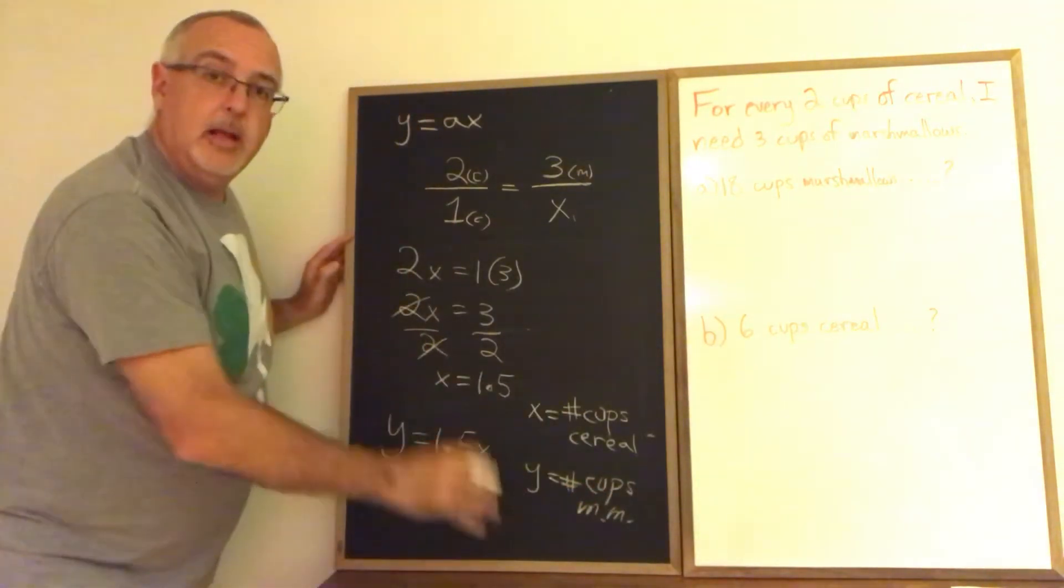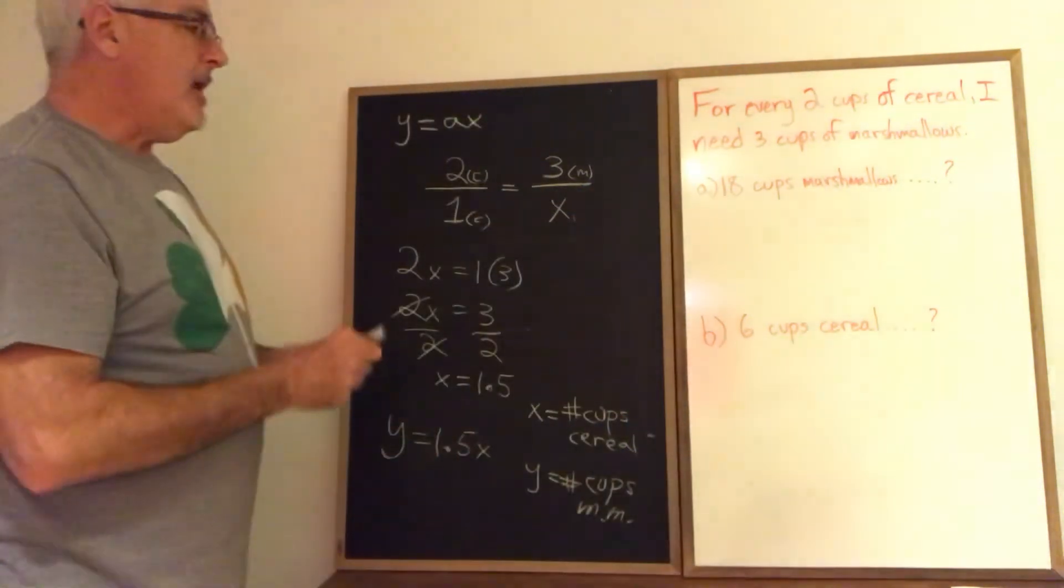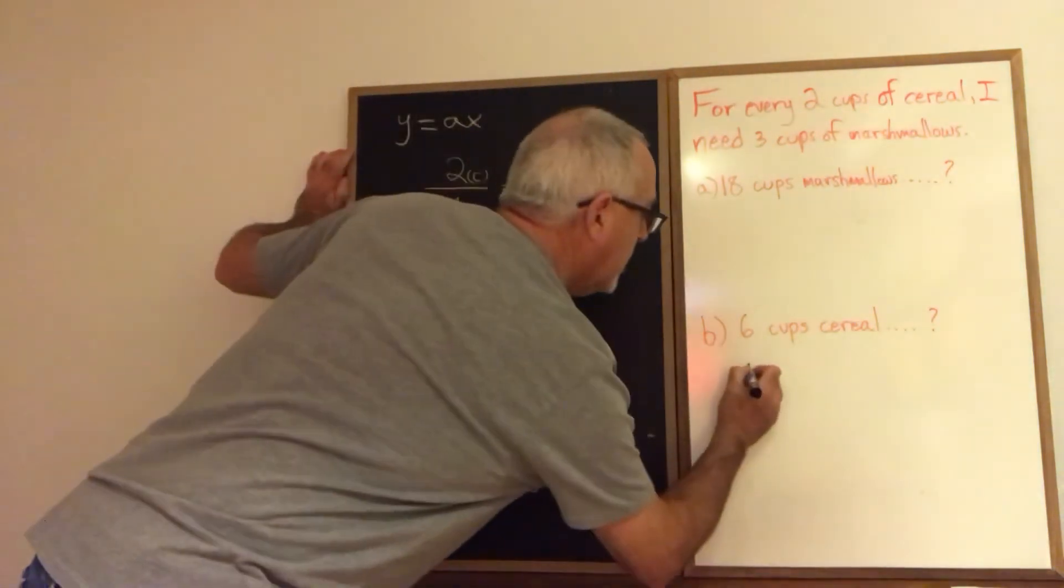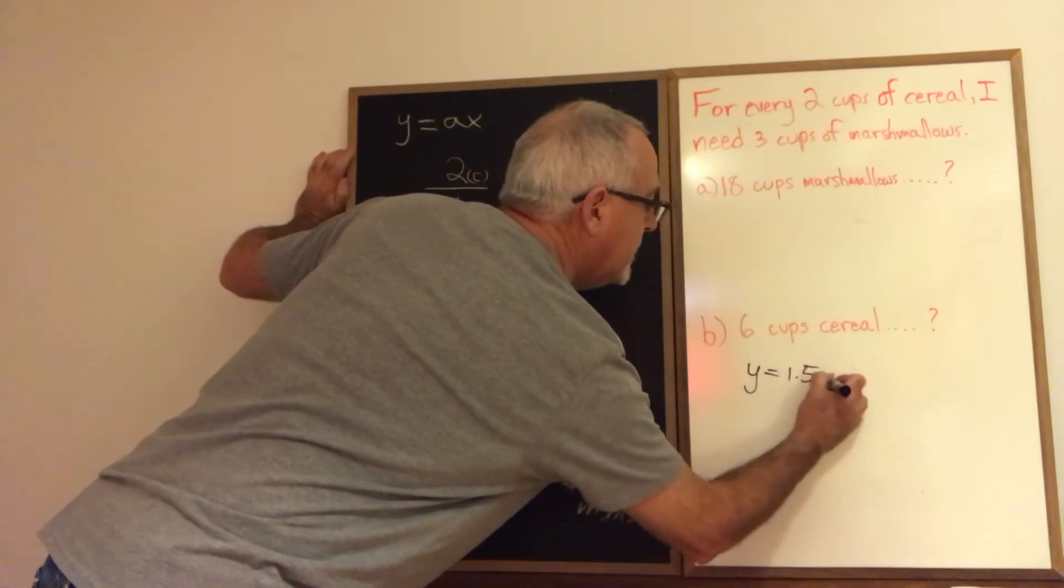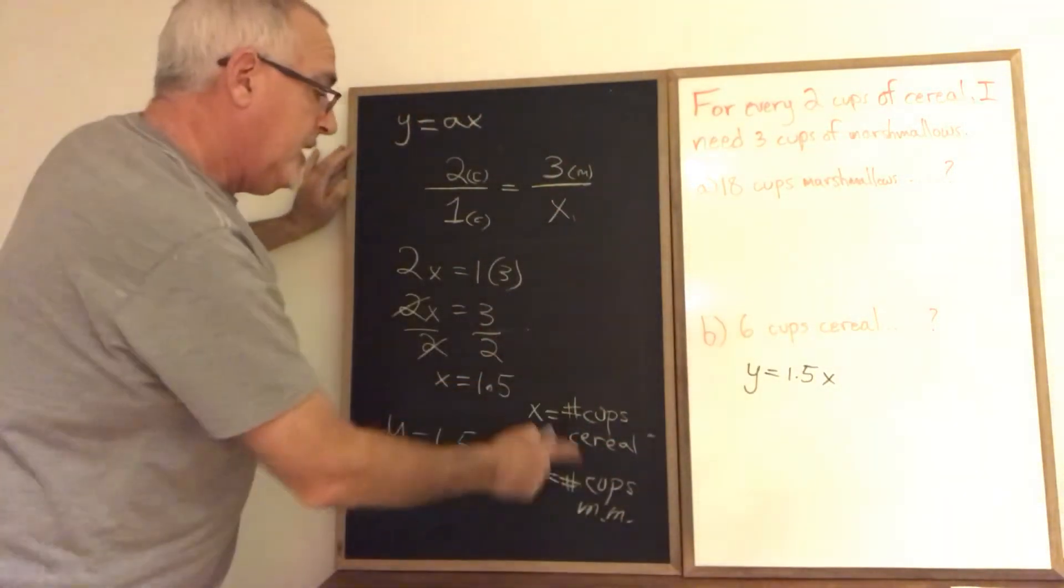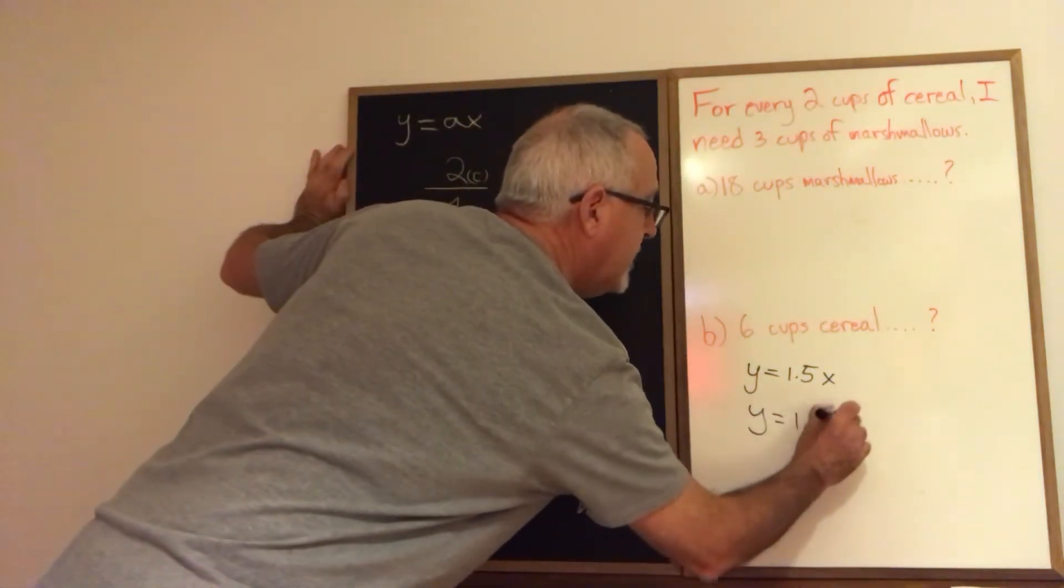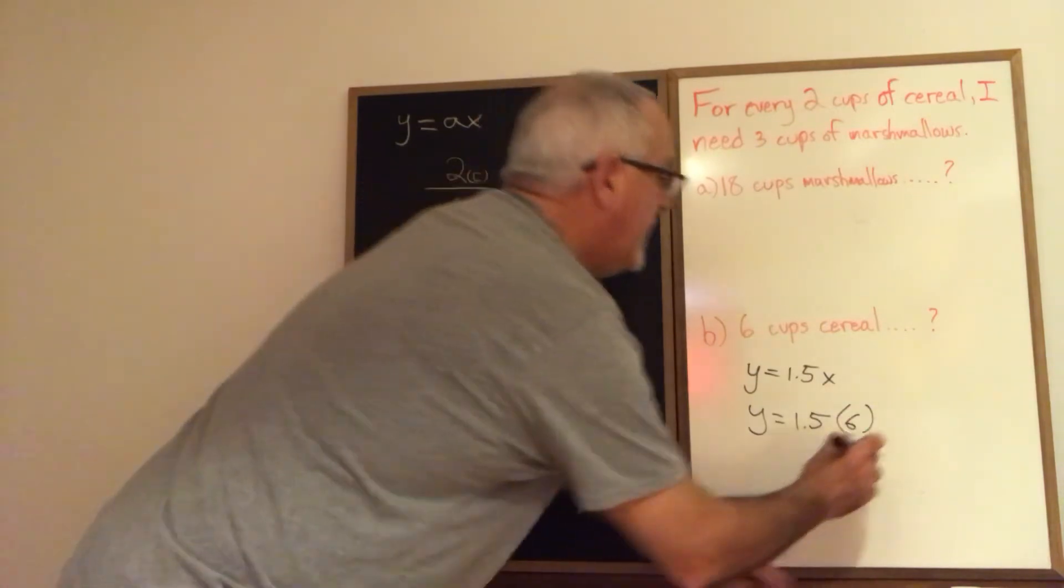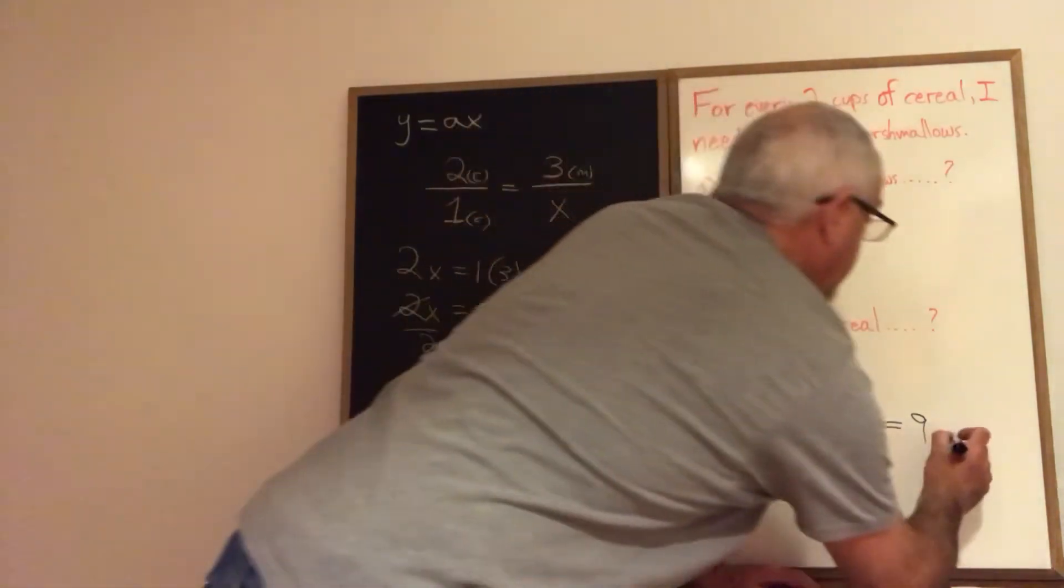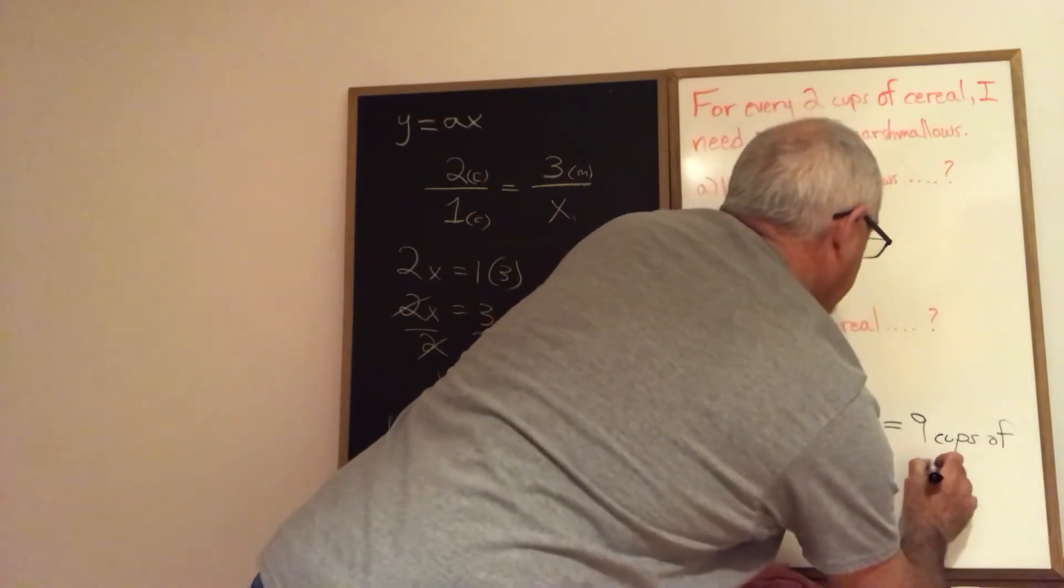Now I have a model and I can use it to answer these questions. I'll start with question B. If I start with 6 cups of cereal, I write my model Y equals 1.5X. 6 is cups of cereal, that's the unit, therefore 6 is an X. I can write Y equals 1.5 times 6. And when I multiply, I get 9. That's my answer, but I need a unit of measure, which is cups of marshmallows.